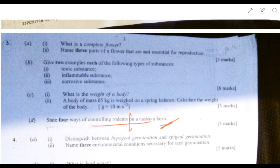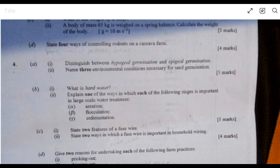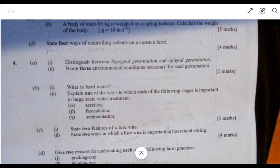The fourth question is asking you to distinguish between hypogeal germination and epigeal germination. With hypogeal germination, the cotyledon remains below the soil. With epigeal germination, the cotyledon or seed leaf grows above the soil surface. Name three environmental conditions necessary for germination: water or moisture, oxygen, and suitable temperature.